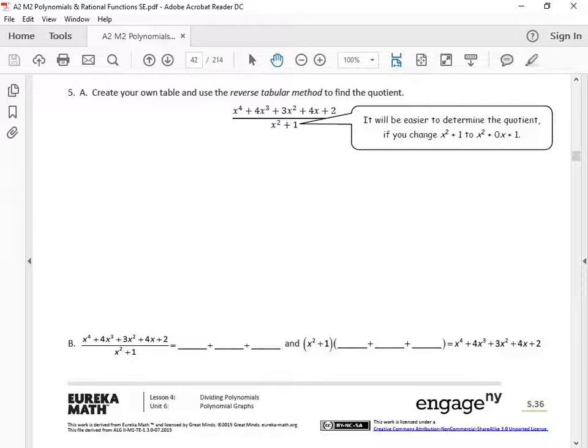Okay, now that you try it yourself, I hope you notice what this bubble is saying right here. If you take the x squared plus one, which is this guy, and add the zero, the missing term, it becomes easier to determine the quotient.